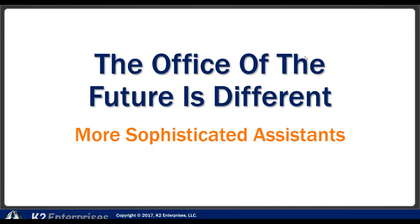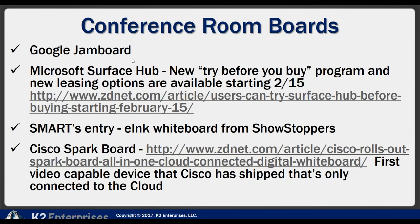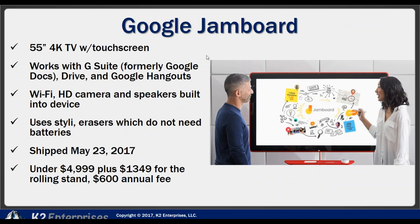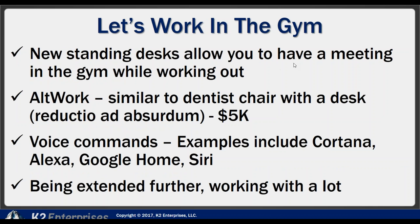The office of the future is different. You're going to use more conference boards — the Google Jamboard, Microsoft Surface, and Smart or Cisco Spark boards are all examples. The Jamboard was just shipped May 23rd at about $5,000 with some annual maintenance fees. These are multi-site, multi-user interactive boards, and we think there'll be quite a bit more of this type of activity going forward.